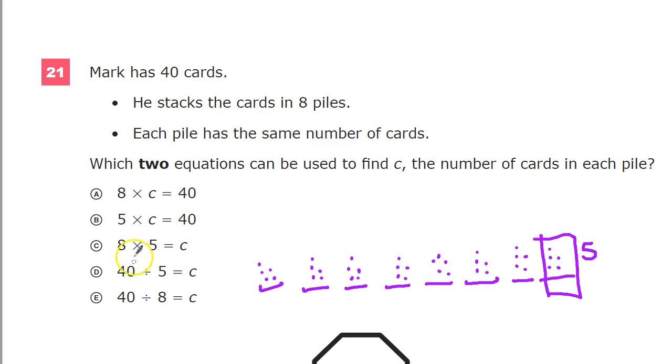So, the first one that I'm going to choose is the basic division. I've visually recreated 40 divided into eight groups. So, this is definitely one. So, this gives me a C value of five.